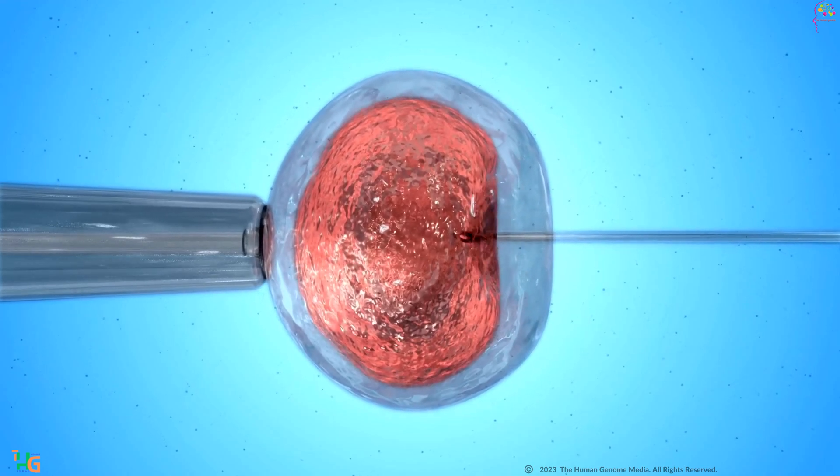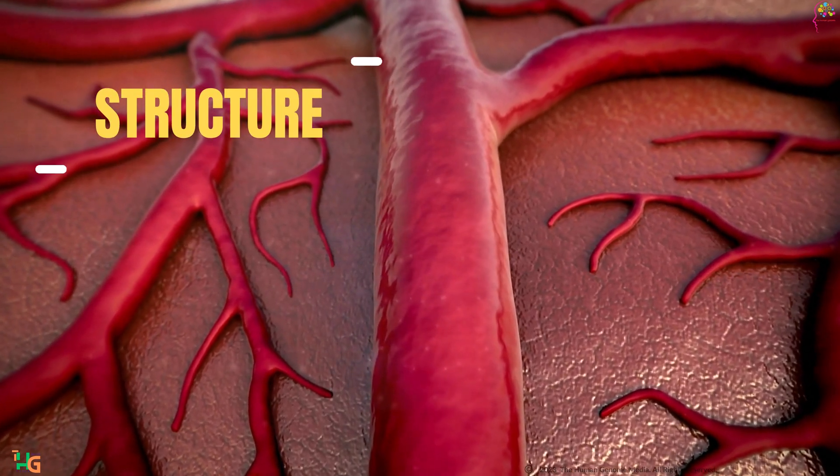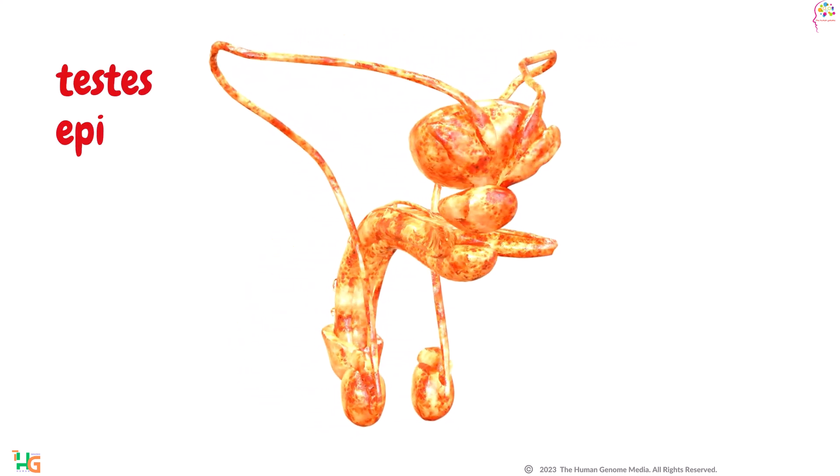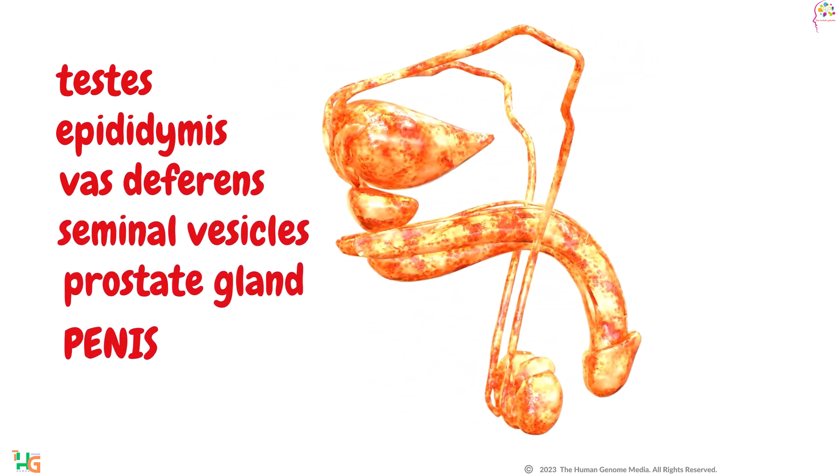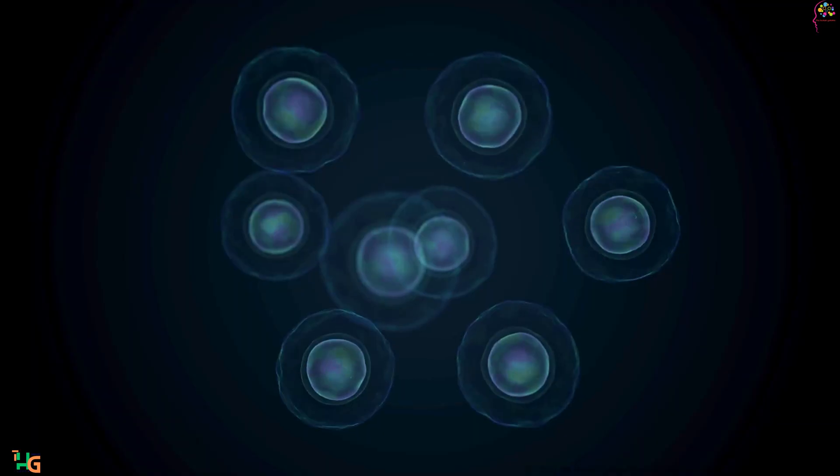Let's start with structure. The male reproductive system consists of several key organs: the testes, epididymis, vas deferens, seminal vesicles, prostate gland, and penis. Each organ plays a crucial role in the reproductive process.